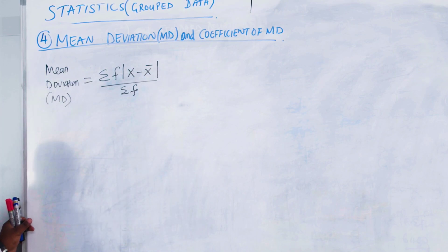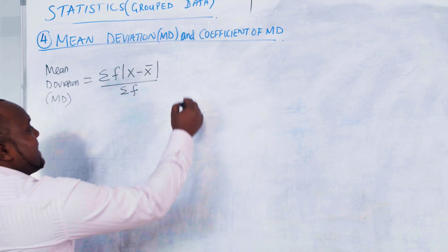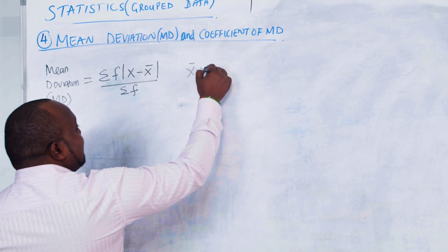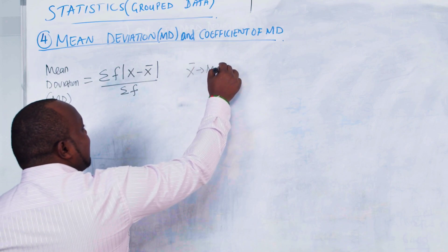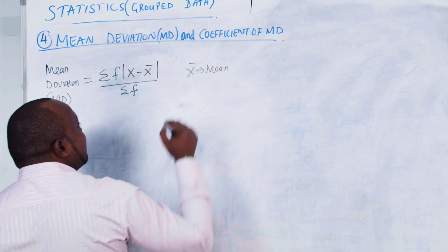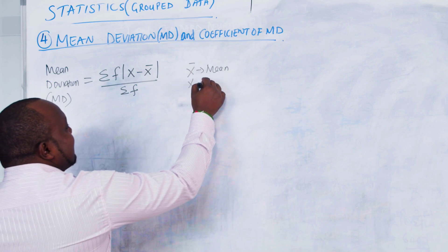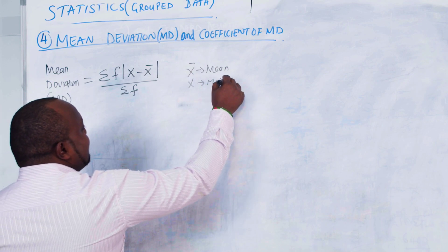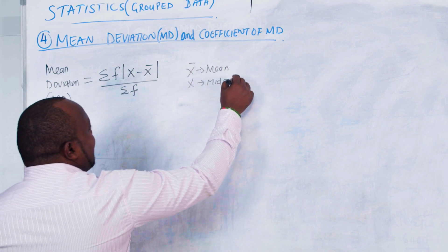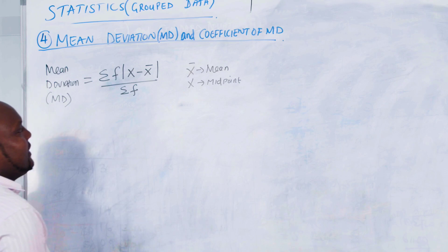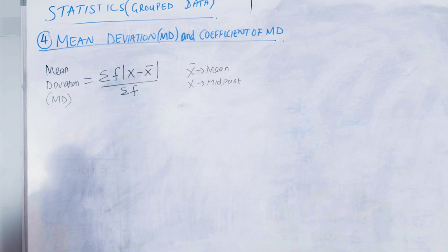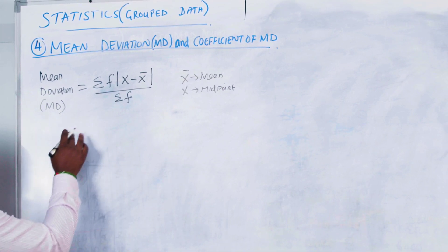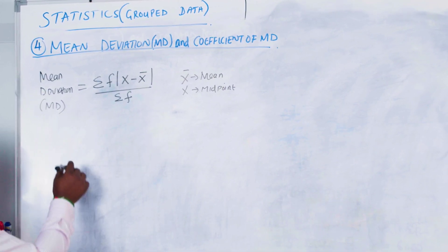In this case, x-bar is our arithmetic mean, and x is our midpoint. So that's how we get the mean deviation.